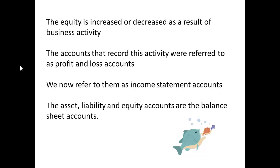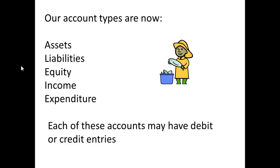Certainly, if you use accounting software, you'll find them called income statement accounts, IS accounts, or just income accounts at times. The asset, liability and equity accounts are the balance sheet accounts. So we've got different account types: assets, liabilities, equity, and income and expenditure — which relate to determining whether we're going to make a profit or loss from our business activity.